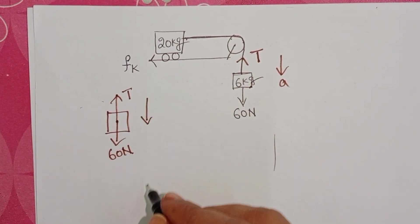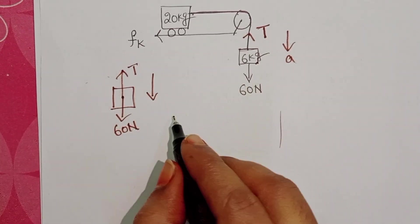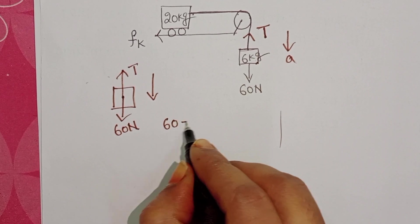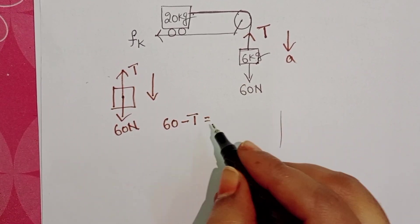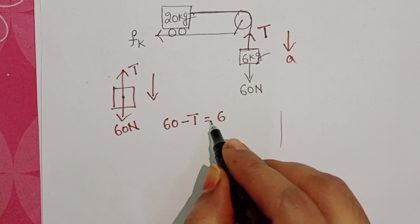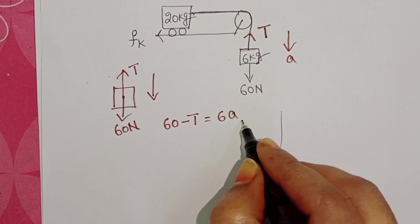Resultant force is in the downward direction. Here, weight of the block is greater than the tensional force. 60 minus T equals mass into acceleration of the block, which is 6A.